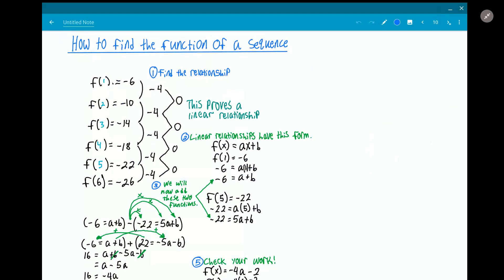And then I said, okay, f(1), this is the first iteration that I'm given, so I'm going to say f(1) is equal to -6, f(2) is equal to -10, f(3) = -14, and I just went down the list. So that's the first thing that I did - I found the relationship.